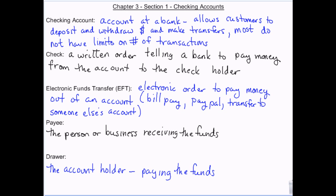Most payments today are done through an electronic funds transfer instead of a check. That is an electronic order — basically an electronic check — telling the bank to pay money out of your account. Common examples are bill pay, PayPal if you're transferring money to someone else's account, or if you use your card as a debit card and put in your PIN number, that's an electronic funds transfer. If you use it as a Visa and actually sign your name, it's processed differently.